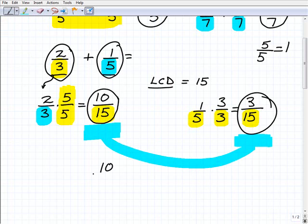So now I can just rewrite this problem, my original one, as 10 fifteenths plus 3 fifteenths. And then I'm going to go ahead and add up. Same denominators now, so I just simply need to add the numerators. 10 plus 3, 13 fifteenths.